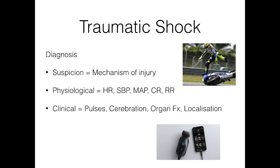Clinical parameters such as palpable pulses, cerebration — whether the patient is perfusing their brain — end organ function such as urine output, and localization are also important. Patients with external signs of haemorrhage, obviously fractured femurs, or clinical signs of haemothorax or distended abdomen make diagnosis somewhat easier. Finally, point-of-care testing — including point-of-care lactates and point-of-care ultrasound — is becoming more common in the pre-hospital arena and adds value for patients in extremis who cannot reach CT due to deteriorating physiology.